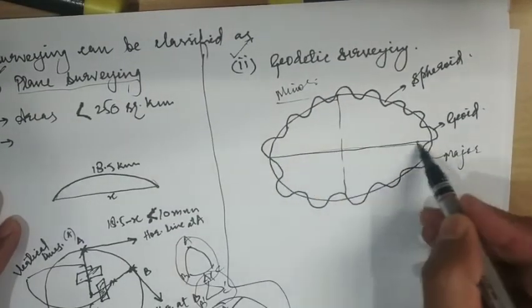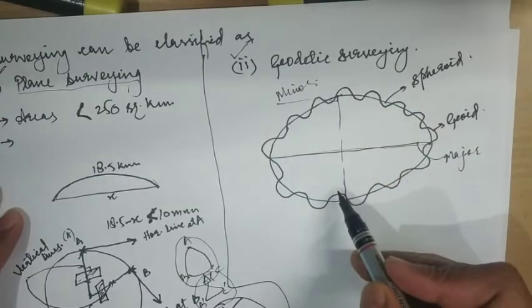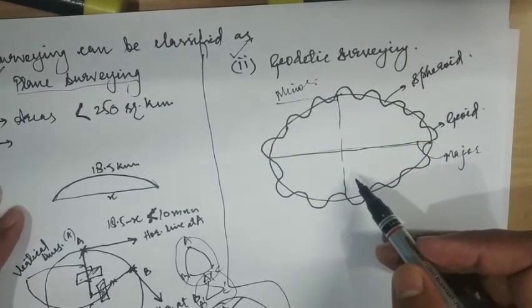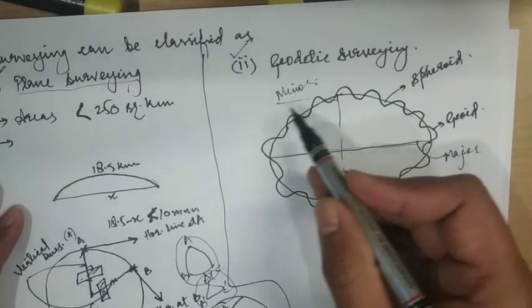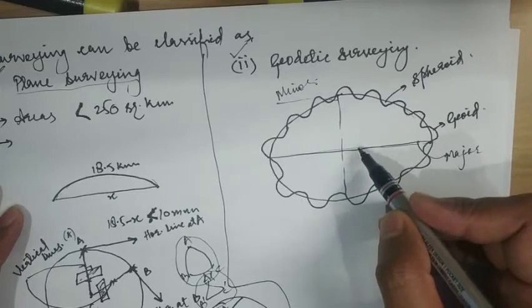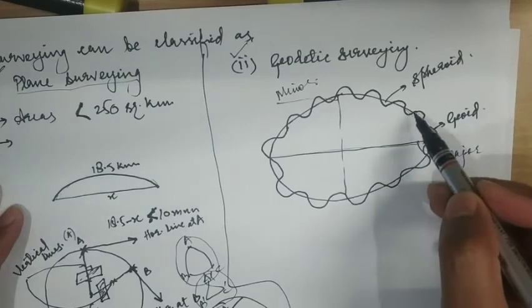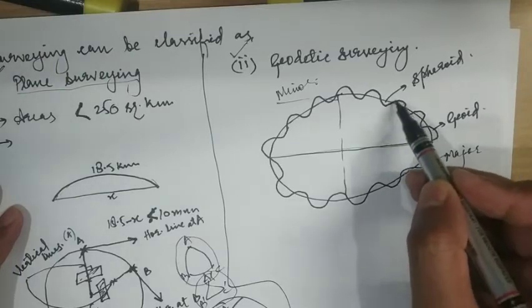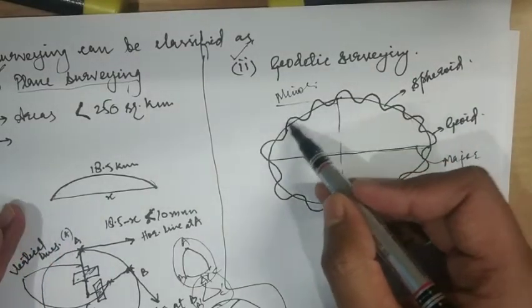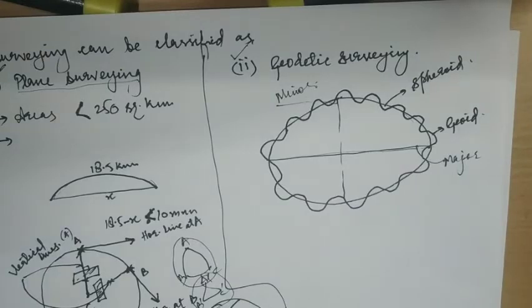By geodetic surveying, the earth's major axis as well as minor axis are computed accurately and a spheroid of reference is visualized. The spheroid is a mathematical surface obtained by revolving an ellipse around the earth's polar axis. The earth's mean sea level surface, which is perpendicular to the direction of gravity at every point, is represented by a geoid. Because of variation in the earth's mass distribution, the surface of the geoid is irregular, but if the irregularities are neglected, the geoid can be very closely approximated as a spheroid. Thus, an imaginary surface representing mean sea level extending over the entire surface of the earth is represented by a spheroid.